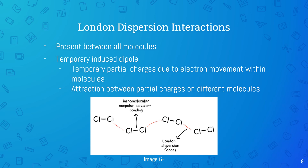London dispersion forces are present between all molecules. They are a result of electron movement within the molecule, producing a temporary induced dipole with neighboring molecules. In other words, electrons move around within molecules, so there will be temporary partial positive and partial negative charges produced. London dispersion interactions occur between these partial charges on different molecules. Here is an example.